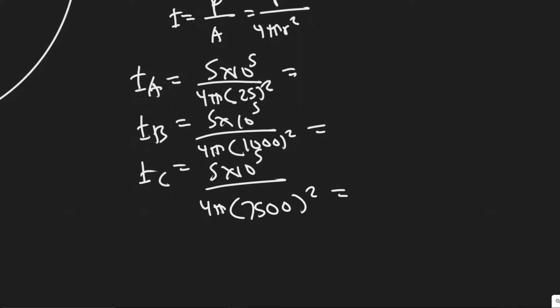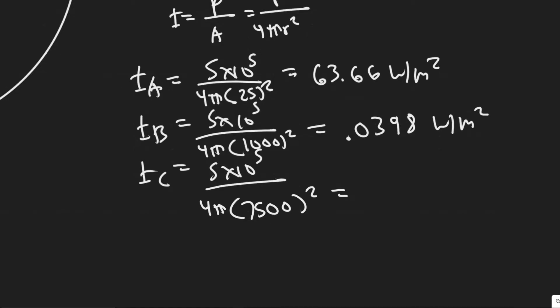Let's calculate. 5 times 10 to the 5 divided by 4 times pi times 25 squared gives us 63.66 watts per meter squared. For the next one, 5 times 10 to the 5 divided by 4 times pi times 1,000 squared equals 0.0398 watts per meter squared. And the last one, 5 times 10 to the 5 divided by 4 times pi times 7,500 squared gives 7.074 times 10 to the minus 4 watts per meter squared.